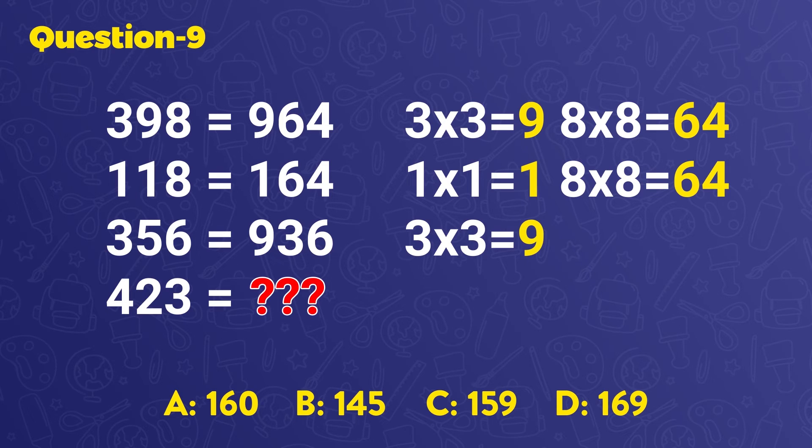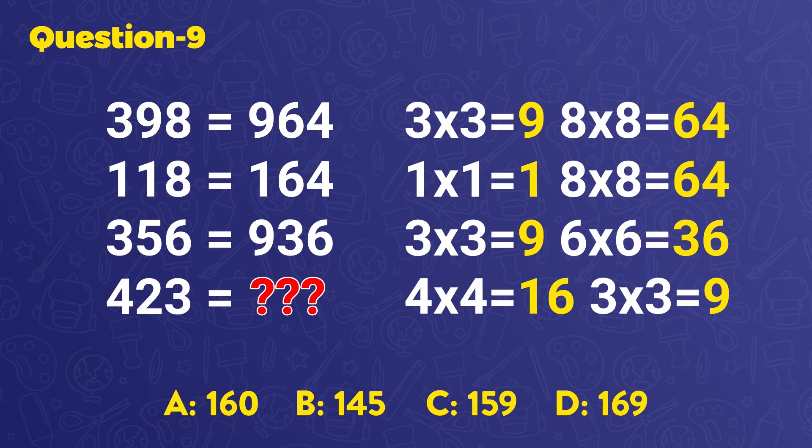356 equals 936, 3 times 3, and 6 times 6. 423 equals 169, 4 times 4, and 3 times 3. So the right answer is D.